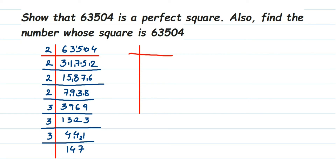So 147 — we got 147. Now 147 again goes into 3: 3 fours are 12, remainder 2, that makes 27, so 3 nines are 27. We get 49. It doesn't go into 3, and it doesn't go into 5, so the next prime number is 7. So 7 sevens are 49 and 7 ones are 7, giving us 7.